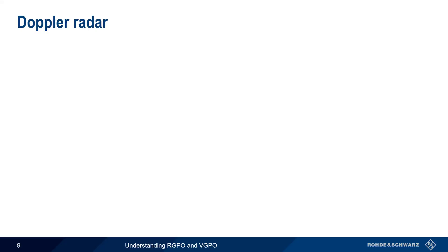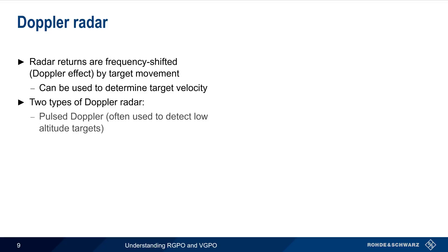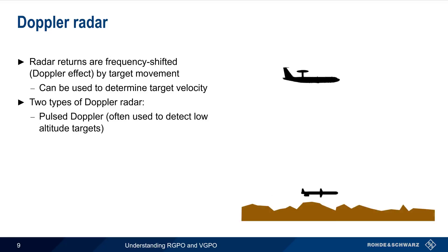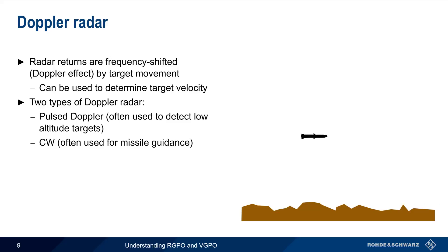Before discussing Velocity Gate Pull-Off, let's spend a few moments reviewing Doppler radar. The Doppler effect causes radar returns to be shifted in frequency due to relative target movement, and this frequency shift can be used to determine the target's velocity. There are two main categories of Doppler radar. The first is Pulse Doppler, which is often used to detect low-altitude targets, since stationary ground clutter and moving airborne objects have different velocities. The second type is CW, or Continuous Wave radar, which is often used for missile guidance since CW provides superior speed and accuracy and can more easily distinguish between aircraft and chaff decoys.